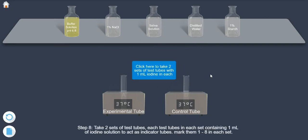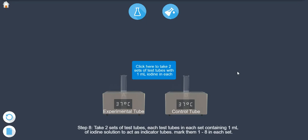Step 8: Take 2 sets of test tubes, 8 test tubes in each set, containing 1 ml of iodine solution to act as indicator tubes. Mark them 1 to 8 in each set.